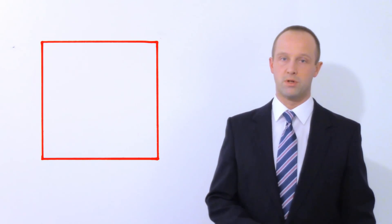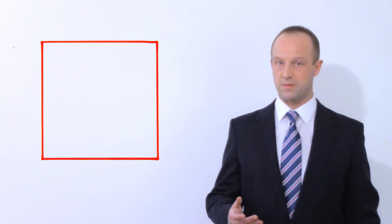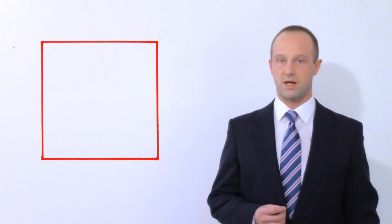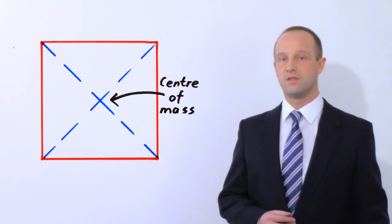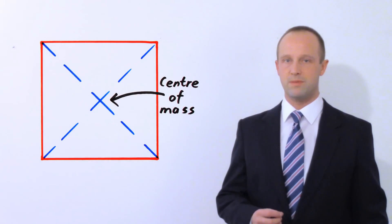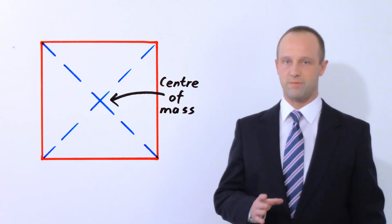For a square, for example, it's got several lines of symmetry. If you draw two of those lines of symmetry, the Centre of Mass has to lie on both. Where those two lines cross over must be the only point where its Centre of Mass lies.